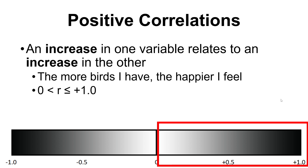Positive correlations occur when one variable increases and the other tends to increase too. We use very neutral language because we can't state directionality — we don't know if one variable increasing is causing the other to increase. An example: the more birds I have, the happier I feel. It could be that having more birds makes me happier, or it could be that being in a good mood makes me go buy birds.